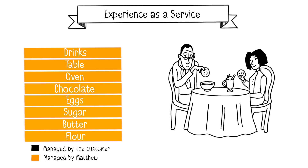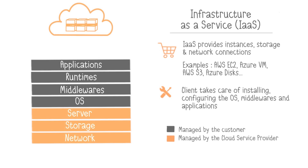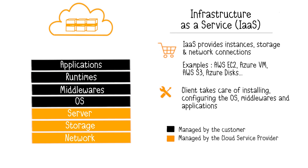Let's first look at the three models of the traditional approach. Infrastructure as a Service corresponds to the infrastructure part of the cloud. It provides instances, storage, and network connection. Instead of buying the hardware, clients pay for on-demand infrastructure services. The strength of Infrastructure as a Service is to offer highly scalable infrastructure resources, meaning they can be adjusted on-demand according to the user's needs. The client takes care of installing, configuring, and updating the OS, middlewares, and applications. The rest is managed by the cloud provider. The target audience is IT operators.